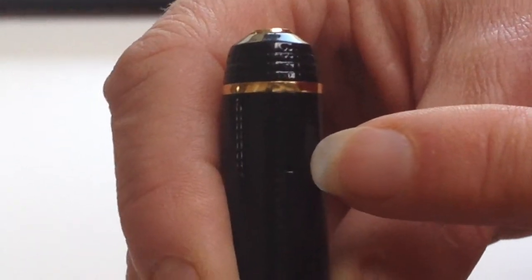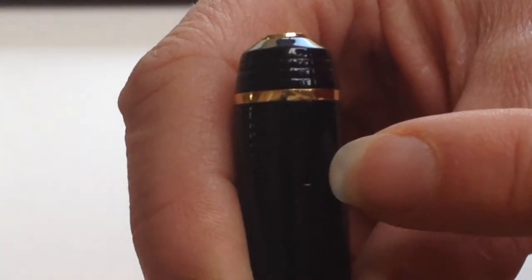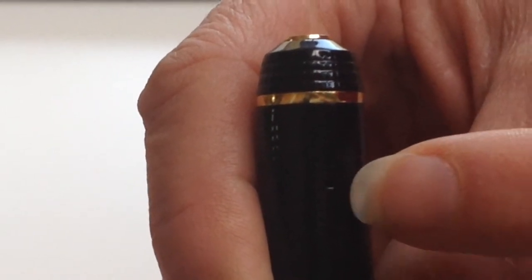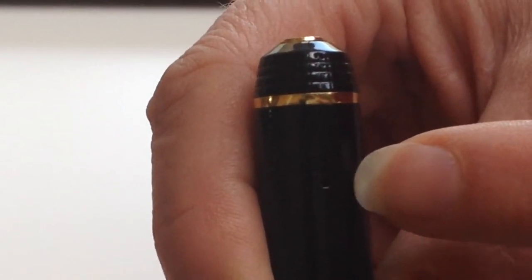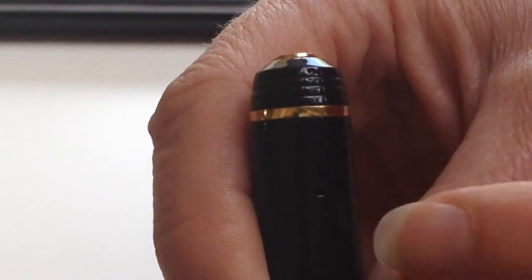Hopefully you won't have to do that. Up at the top we have the status indicator light. When you're operating your camera, this flashes and stays on in different colors. When I'm showing you how to record video and take photos in the next video, I'm going to show you how to know what's going on with this.